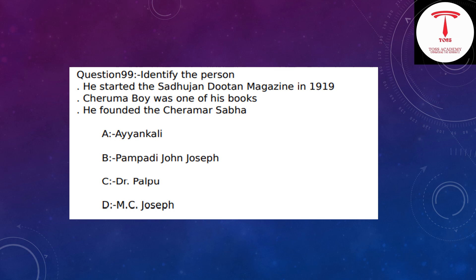Question 99: Identify the person based on the statements. He started the Saadhu Jenna 2000 magazine in 1919. Cherry My Boy was one of his books. He founded the Jayarama Sabha. The answer is option B — Pambadi John Joseph.